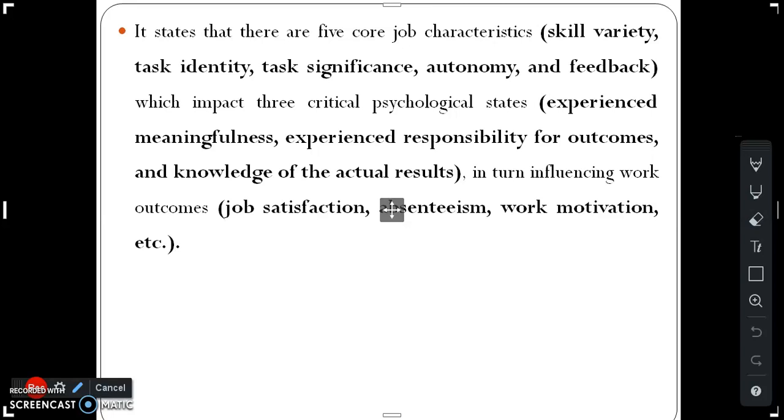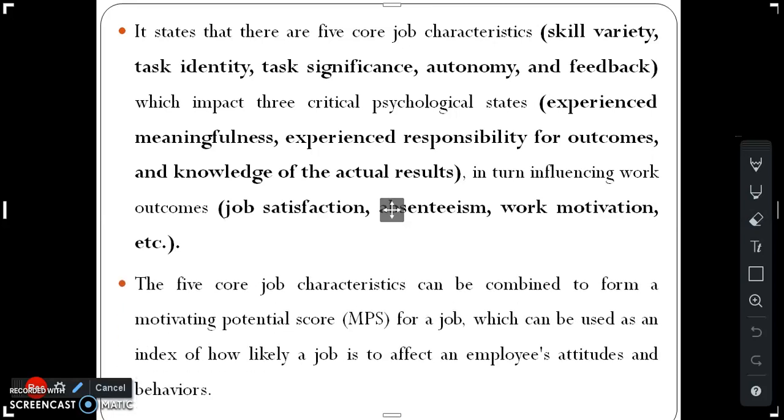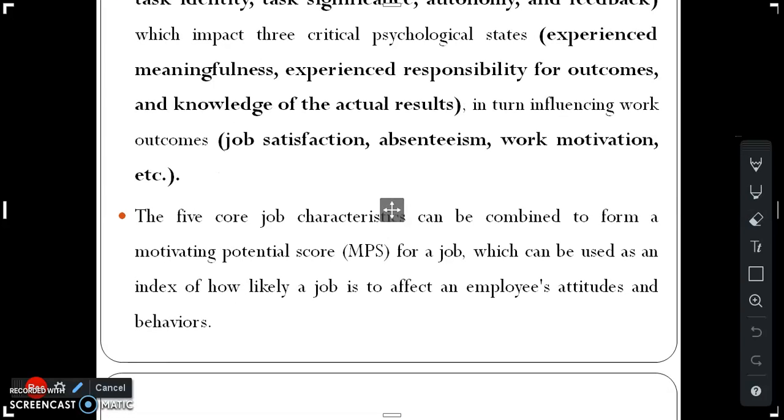In turn, influencing work outcomes: job satisfaction and work motivation. The five core job characteristics can be combined to form a motivating potential score (MPS) for a job, which can be used as an index of how likely a job is to affect an employee's attitudes and behaviors.